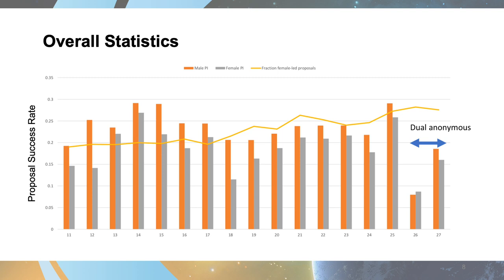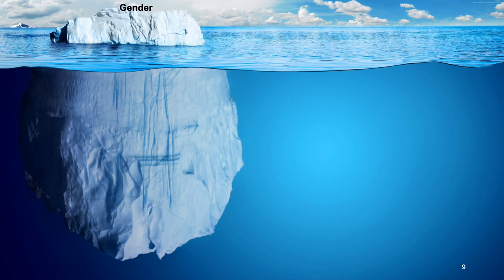That motivated the Hubble team to switch to dual anonymous peer review. In cycles 26 and 27, the implementation first resulted in a slightly higher success rate for inferred female PI proposals. In cycle 27, that trend was flipped, but data from their most recent mid-cycle review shows that parity exists between genders — a 43% success rate for inferred male PI and 43% for inferred female PI. But gender, of course, is just one of many parameters of diversity that we wish to think about, and it may represent only the tip of the iceberg.